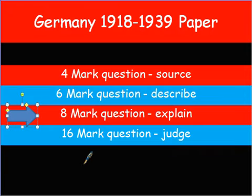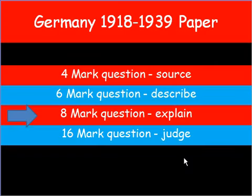Welcome to this, the third part of the Nazi Germany walkthrough where I'll be taking you through an 8 mark question. This 8 mark question will ask you to explain — explain why something happened, or explain the effect of something, or explain the cause of something. Now this 8 mark question is slightly more involved, perhaps slightly more tricky than the 4 and 6 mark questions that we've looked at.